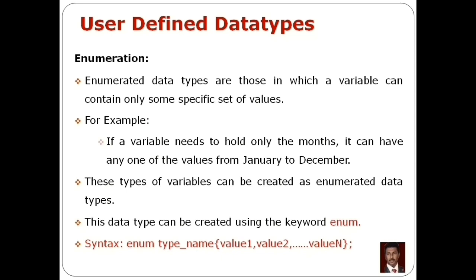After the keyword, there is a name — we can use that name. If we have a variable, we can use the name. Then, for the specific set of values, we use curly braces. Inside the curly braces, we can list the values: value 1, value 2, and so on. Finally, we close the curly braces and add a semicolon. This is the syntax.